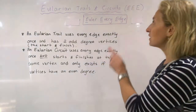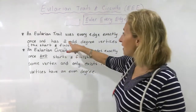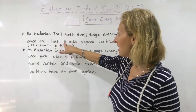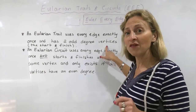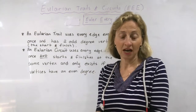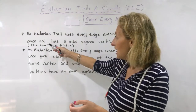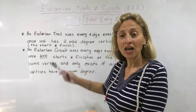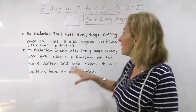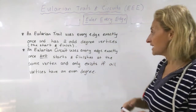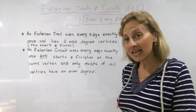What makes Eulerian Trails and circuits interesting to study is that an Eulerian Trail has to have exactly two odd degree vertices. So if it has two odd vertices and the rest are even, then we call it an Eulerian Trail, and we know it has to start and finish at those two odd vertices. If we have an Eulerian Circuit, then it has to have only even degree vertices — it can't have any odd vertices.